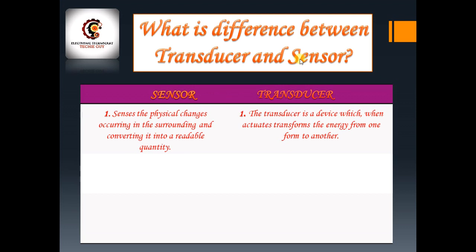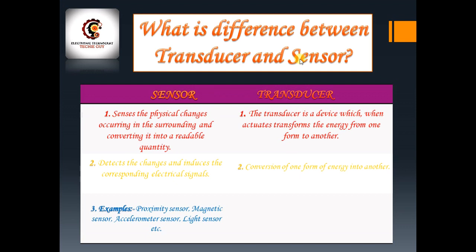Second point: a sensor detects changes and induces the corresponding electrical signals according to those changes. A transducer converts one form of energy into another — similar to the first point. Third point — examples: sensors include proximity sensors, magnetic sensors, accelerometers, and light sensors. Transducers include thermistors, potentiometers, and thermocouples. That is the difference between a transducer and a sensor.